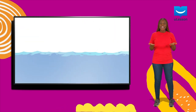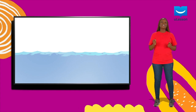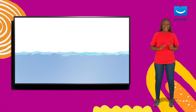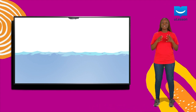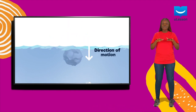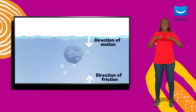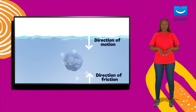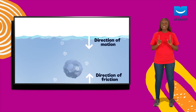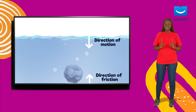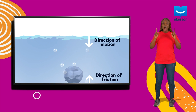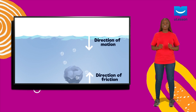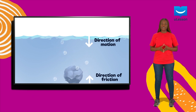For example, if you drop a stone in a tank, you can easily see that the stone slows down as it enters the water. This is because the friction is acting upward, opposite the motion of the stone.